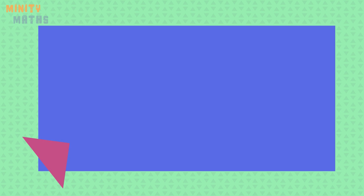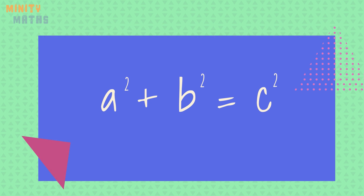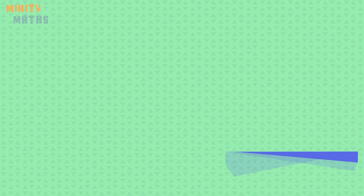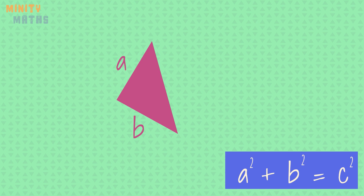Here's Pythagoras's theorem, and here's how the theorem works. After labeling the sides of the triangle with a, b, and c, we then square the sides.